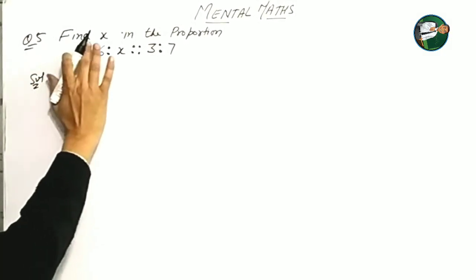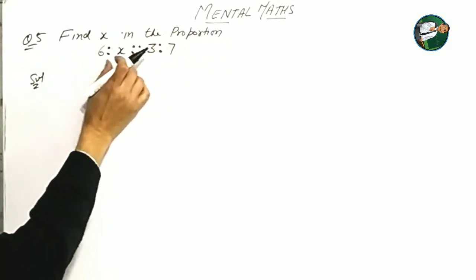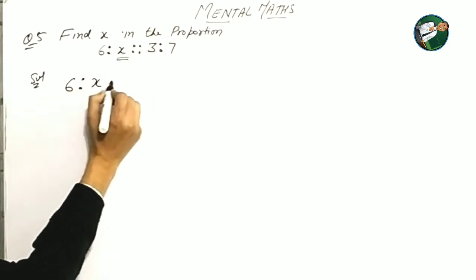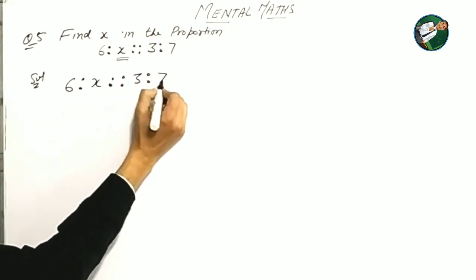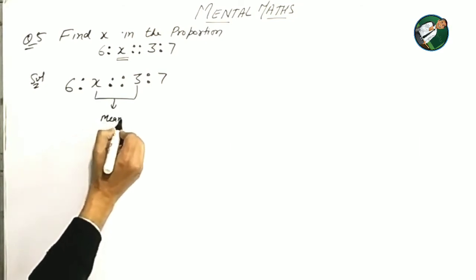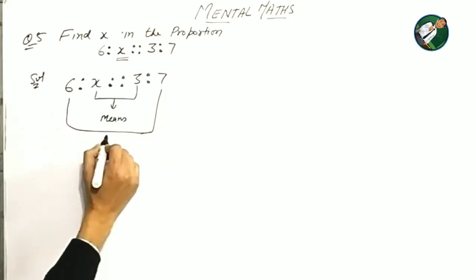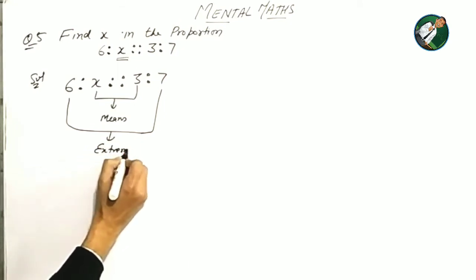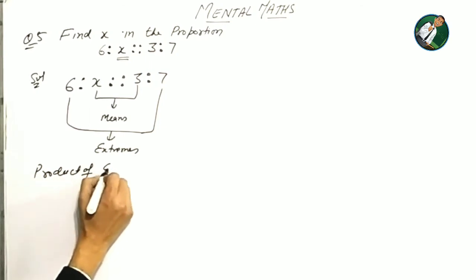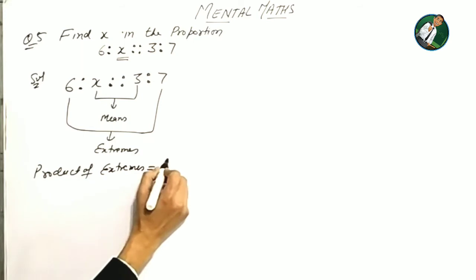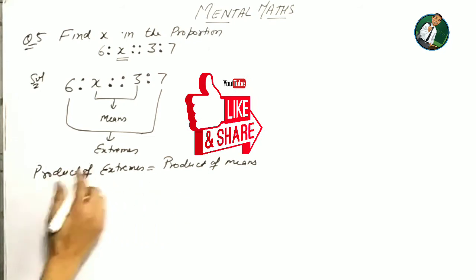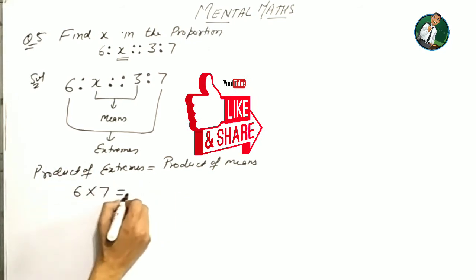Question number five: find x in the proportion 6 is to x as 3 is to 7. Look at the solution carefully. Here x and 3 are our middle terms, meaning the means. And 6 and 7 are our extreme terms.